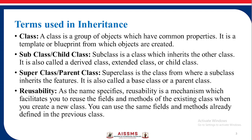Terms used in inheritance. Class: a class is a group of objects which have common properties. It is a template or a blueprint from which objects are created. Subclass or child class: a subclass is a class which inherits the other class. It is also called a derived class, extended class, or child class.